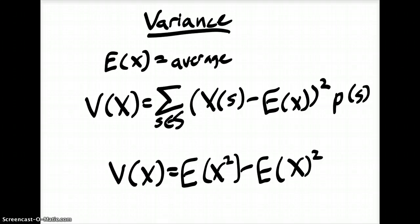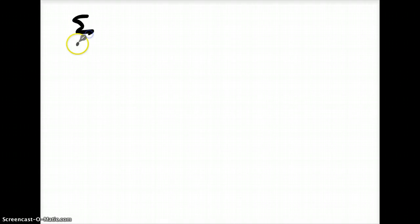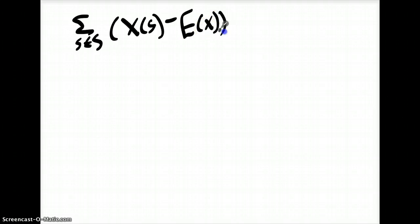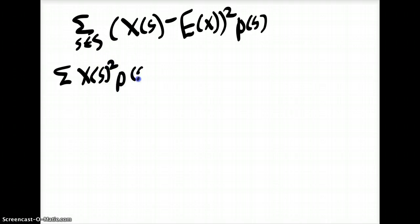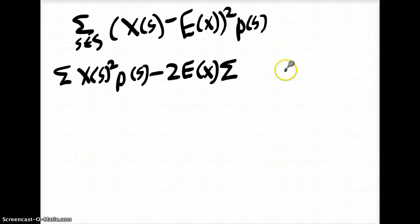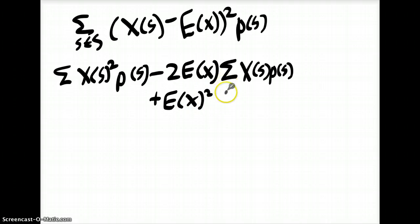Let me run through this proof quickly. We start at the very top with the sum of s in S, of X(s) minus E(X), squared, times P(s). Now we can distribute out the squared term X(s) minus E(X), which leaves us with the sum over s in S of X(s) squared times P(s), minus 2E(X) pulled out of the sigma times X(s) times P(s), plus E(X) squared times the sum of the probability of s.